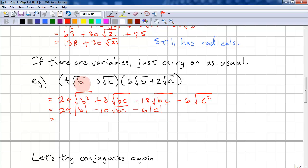However, our original domain is b is greater than or equal to 0 and c is greater than or equal to 0. So our answer is just 24b minus 10 root bc minus 6c. And we have the restrictions: b is greater than or equal to 0, c is greater than or equal to 0, same domain restrictions as original expression.